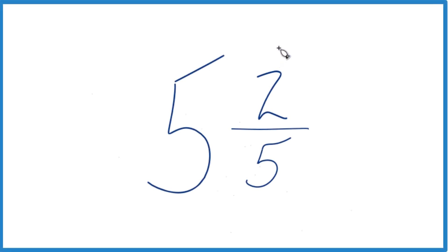Let's write the mixed number, 5 and 2 fifths, as an improper fraction. Here's how you do that.